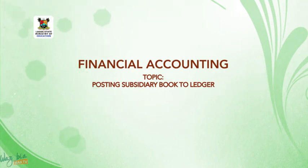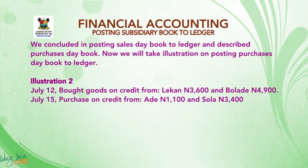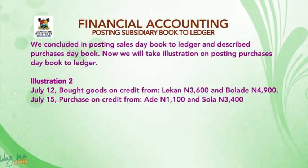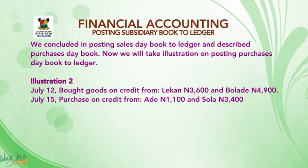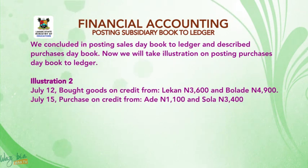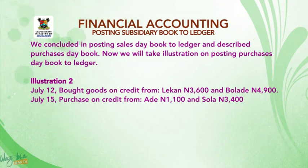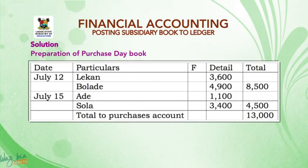Welcome back. In the first segment we described subsidiary books and the divisions of subsidiary books. We concluded with posting the sales day book to ledger and described the purchase day book. Now we will take an illustration on posting the purchase day book to ledger. Illustration 2: July 12, bought goods on credit from Lecon 3,600 naira and Bolady 4,900 naira; July 15, purchases on credit from Adi 1,100 naira and Shola 3,400 naira.